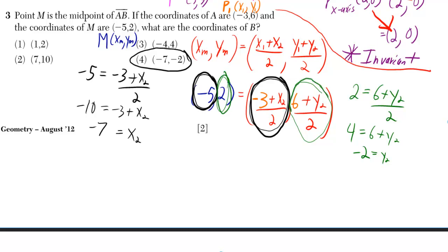So if you do that, you get two separate equations. You get that negative 5 is equal to negative 3 plus x2 over 2. And you also get that 2 is equal to 6 plus y2 over 2. And then you just solve both of those equations.